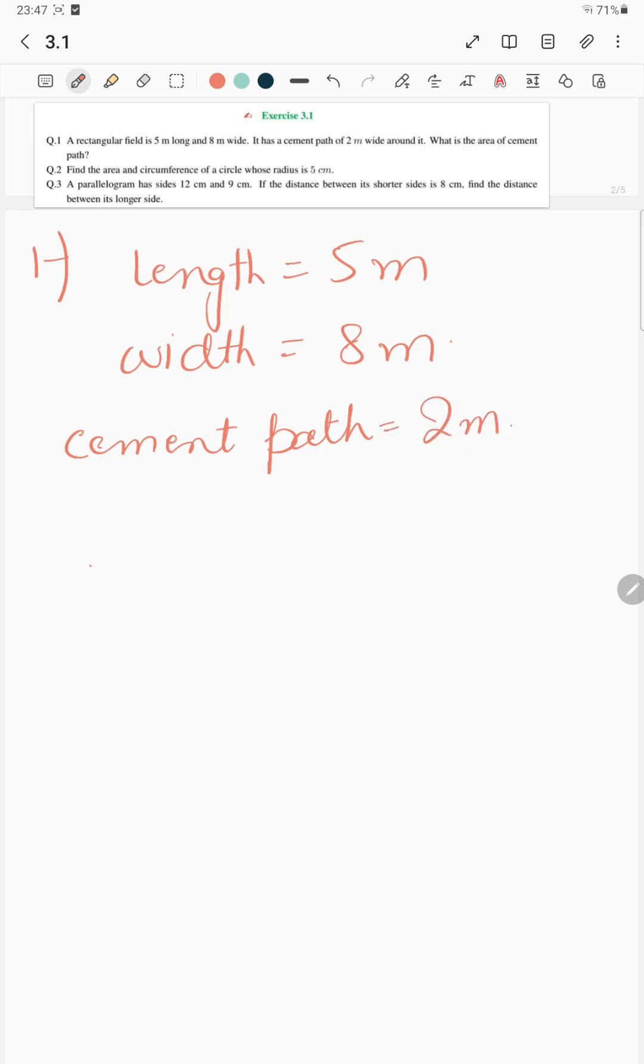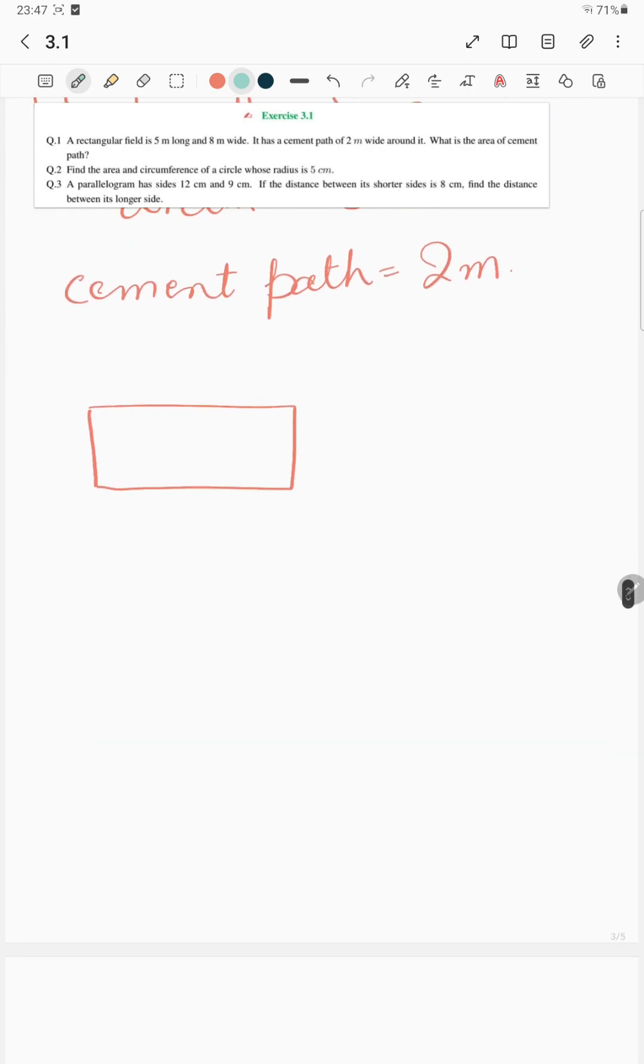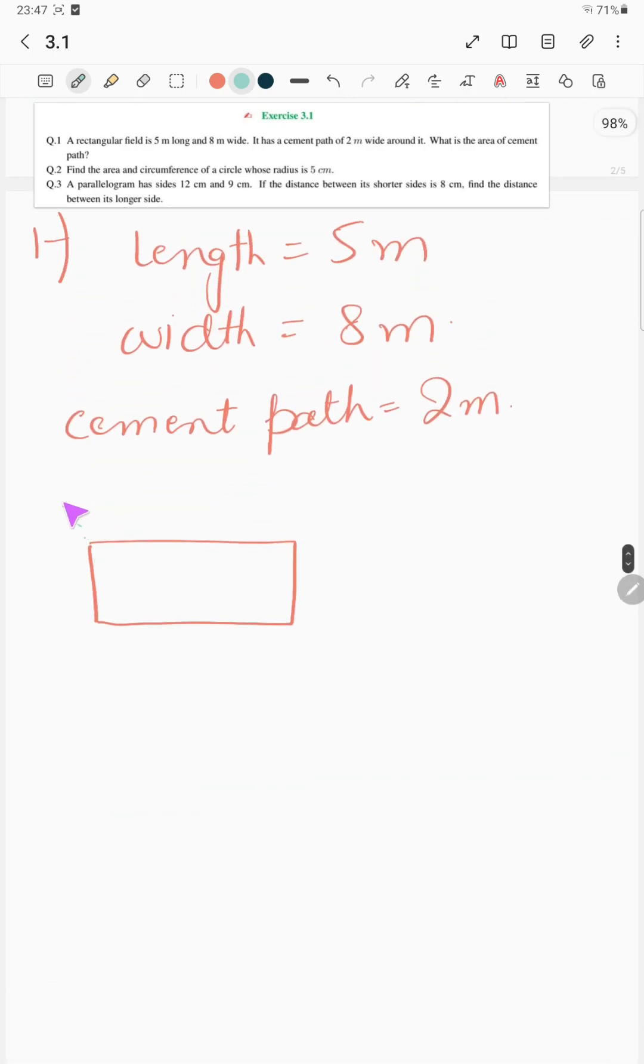What is the area of the cement path? So it means we have a rectangular field like this, and the rectangular field has a cement path like this. This is the cement path and it is 2m wide.